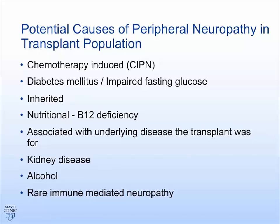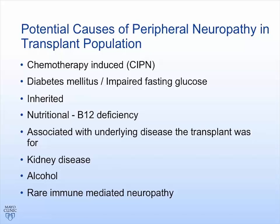In the transplant population, nutritional issues matter. B12 deficiency, B6 deficiency rarely, thiamine deficiency, and vitamin E can cause balance troubles — all the vitamins are important. Also think about the underlying disease the transplant was for: myeloma, amyloid, or lymphoma can be associated with neuropathy on their own. Kidney disease, when severe — on dialysis with very poor kidney function — can be associated with neuropathy. Alcohol use is probably under-recognized and under-discussed. And there are rare immune-mediated neuropathies that can occur in the setting of transplant.